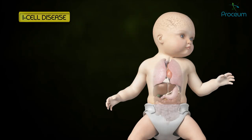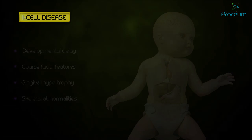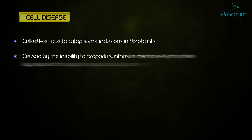I-cell disease presents with growth and developmental delay, coarse facial features, gingival hypertrophy, and skeletal abnormalities. It is called I-cell disease due to cytoplasmic inclusions in fibroblasts. It is caused by the inability to properly synthesize the mannose-6-phosphate tag required for targeting enzymes to lysosomes.